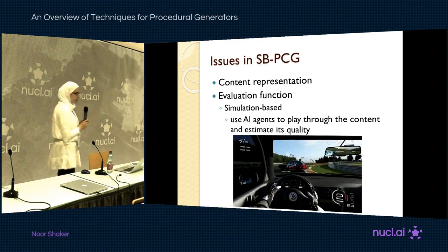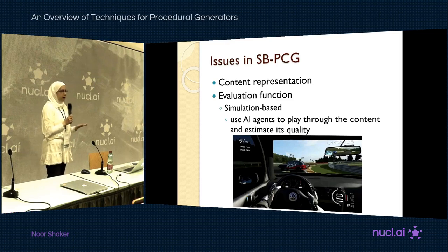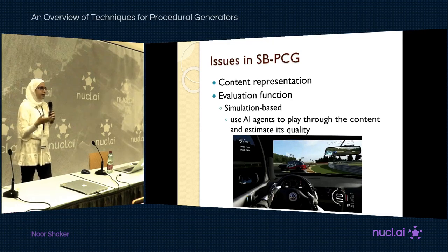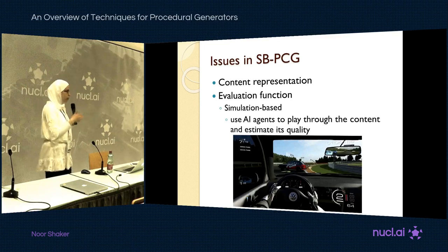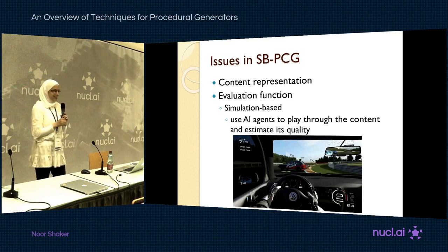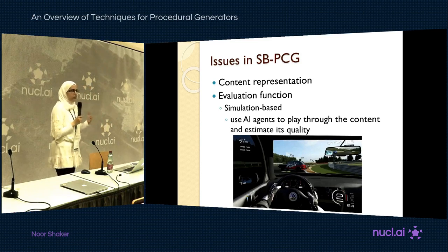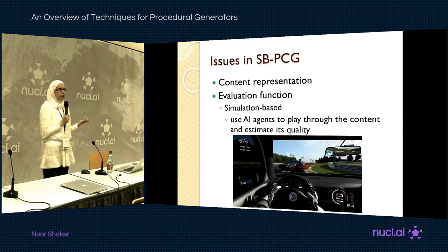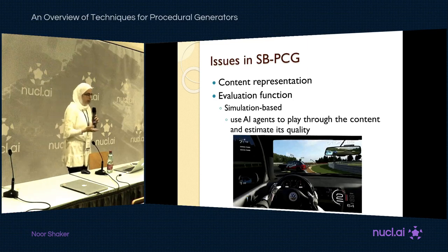Another evaluation method is simulation-based: you play through the level with an AI agent and score it based on performance. For a car racing game, you can train an AI agent to drive the track and score it based on how it handles turns and average speed per segment. For checking playability, you build an AI agent that verifies whether a level can be completed. If you want content tailored to a specific human player, you build an agent that plays like that player and scores based on its behavior.